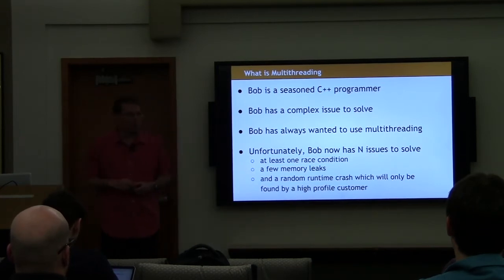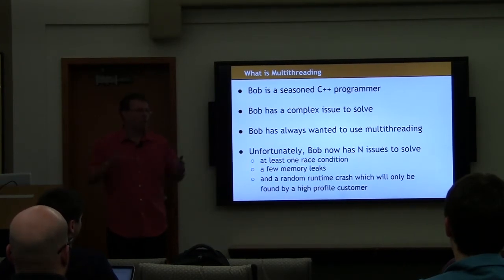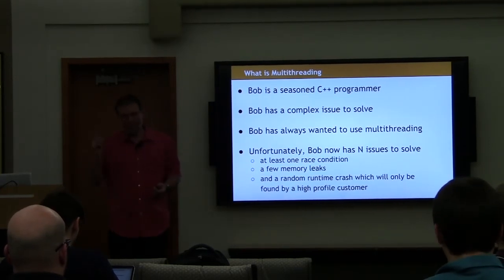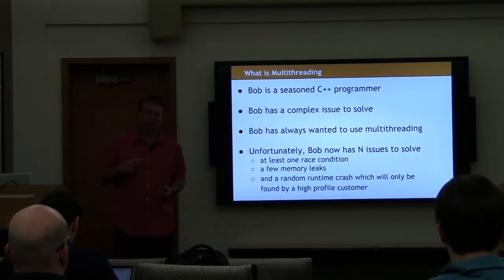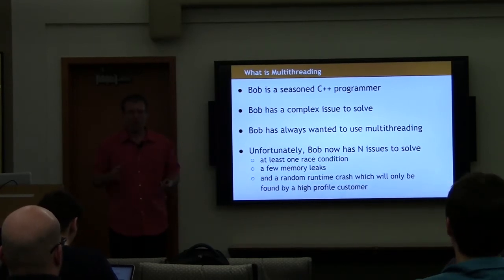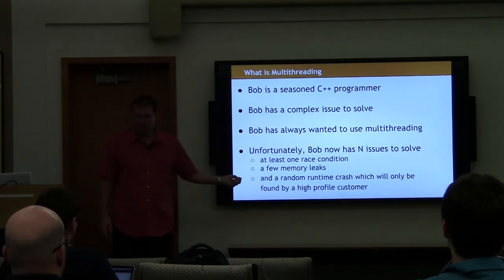What usually happens when somebody is first exposed to multithreading: there's some programmer — we'll name him Bob. He's a very qualified C++ programmer, knows C++17, up on the technical specifications, but he's never worked with multithreaded code before. He has some new problem and thinks, 'I know, multithreading is the way I'm going to solve this problem efficiently.' Unfortunately, Bob now has at least one race condition, a couple of memory leaks, some use-after-free errors, and I guarantee you at least one runtime crash that will not be found until after the QA cycle.